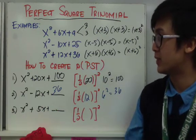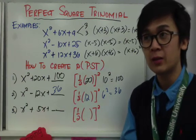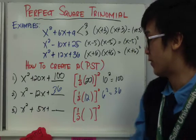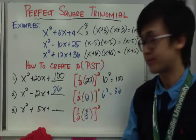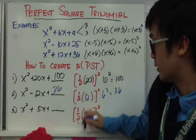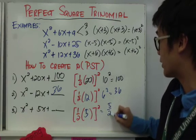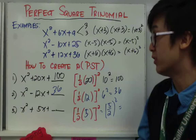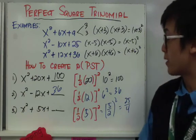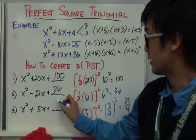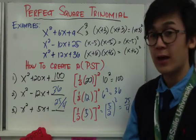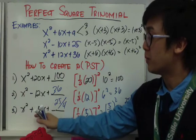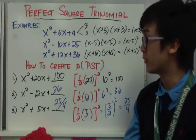For a middle term of 5, since it's an odd number, half of 5 in fraction form is 5 over 2. Then square it: 5 over 2 squared gives 25 over 4. So the constant term for this perfect square trinomial is 25 over 4, which is a fraction. When your middle term is an odd number, you will end up with a fraction as your constant term.